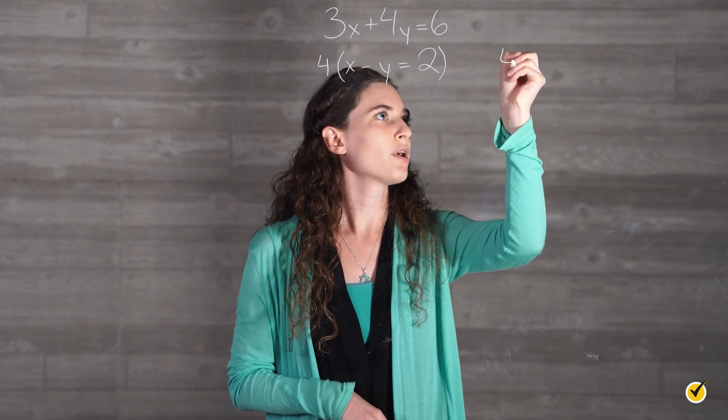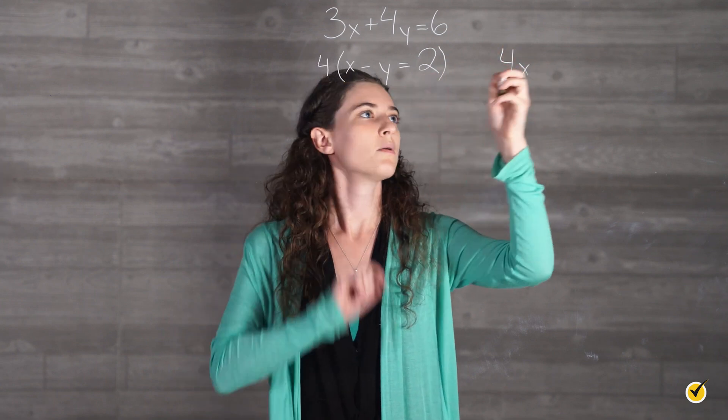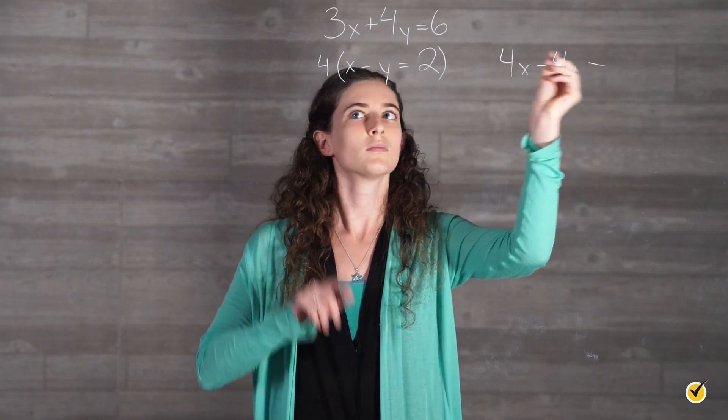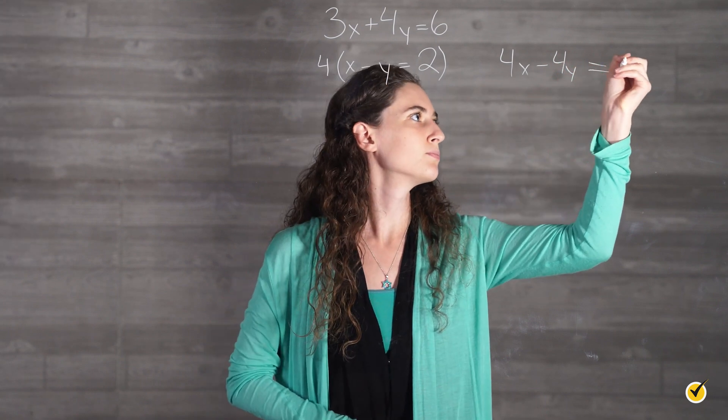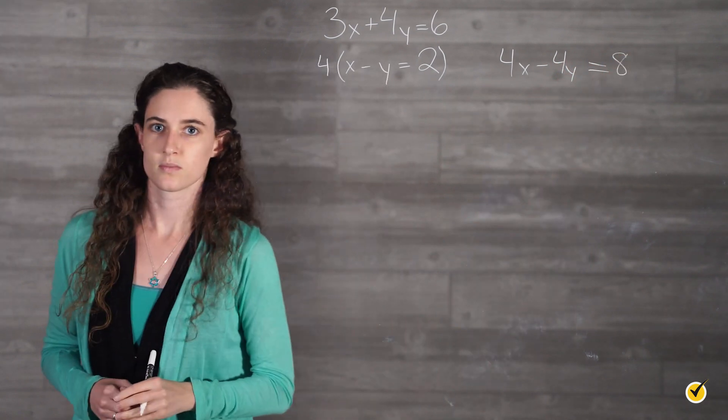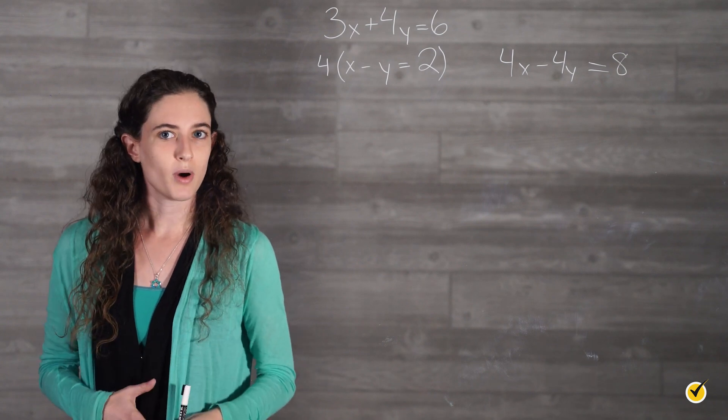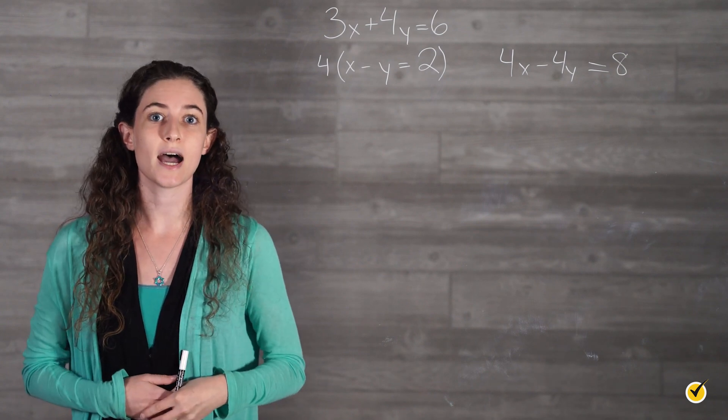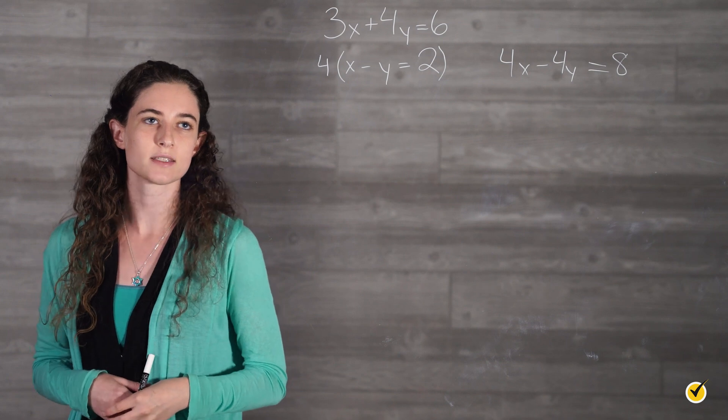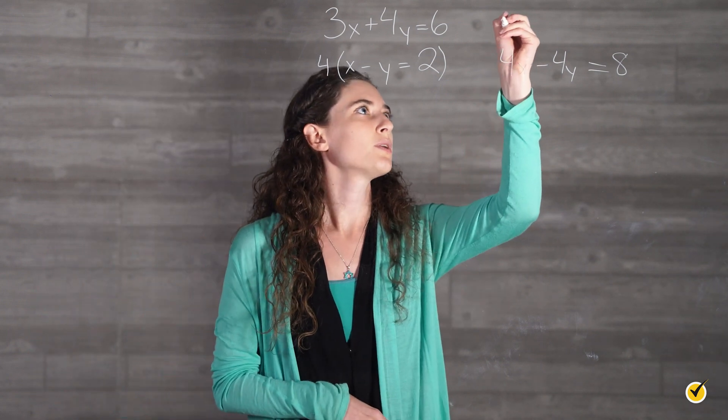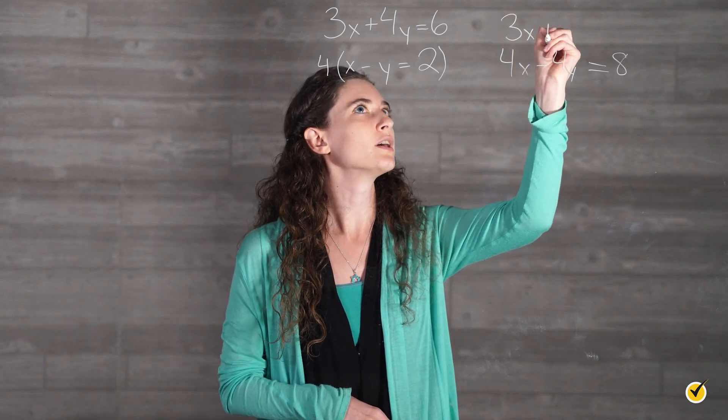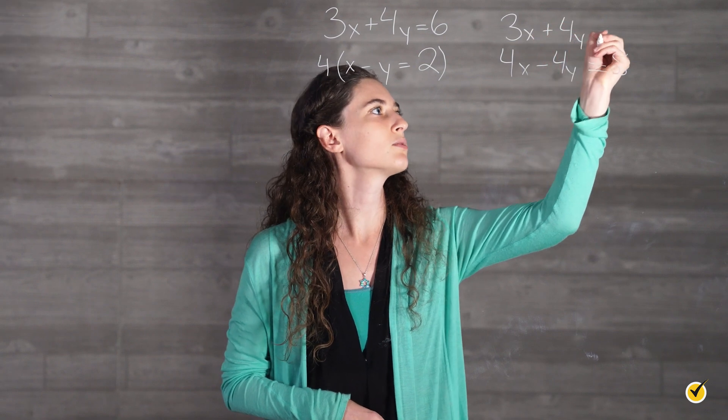So we get 4x minus 4y is equal to 8. Now since I want my y terms to cancel out, I am going to add my two equations and solve for x. So I am just going to rewrite our equation over here: 3x plus 4y equals 6.